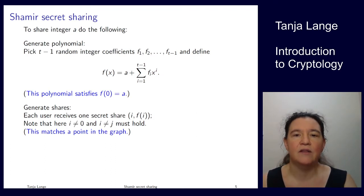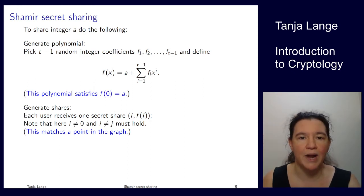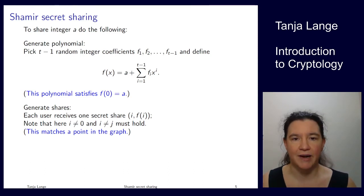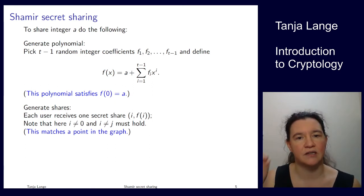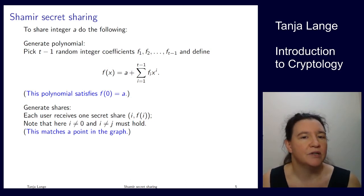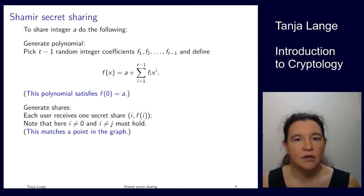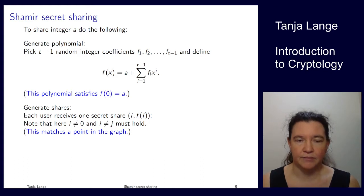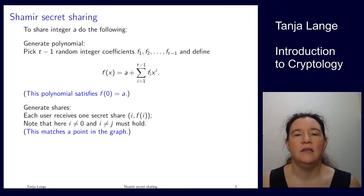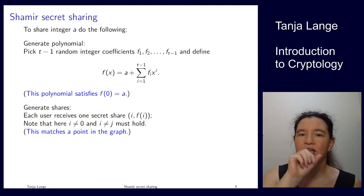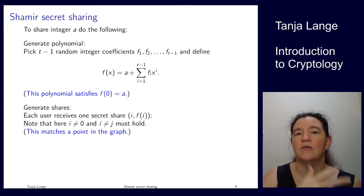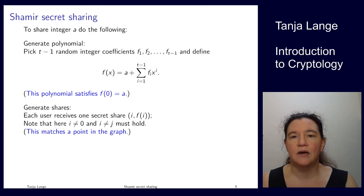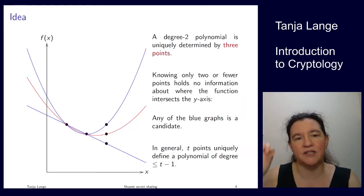Shamir's idea is to share an integer a as the y-intercept — the intersection with the y-axis. He builds a polynomial of degree t minus one around it. This polynomial must be totally random; the only fixed property is that it intersects at a. So we pick t minus one random coefficients, build the polynomial, and evaluating at x equals zero gives back a.